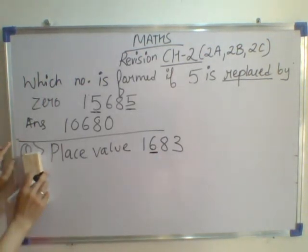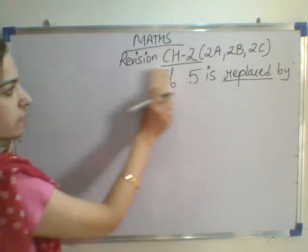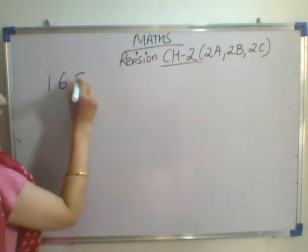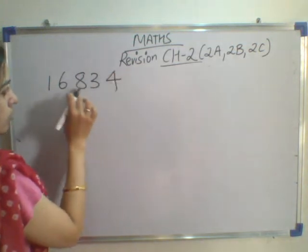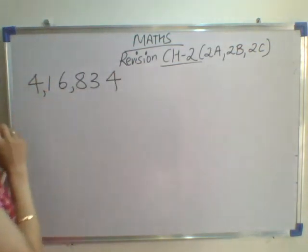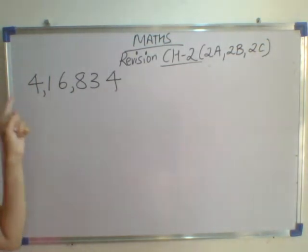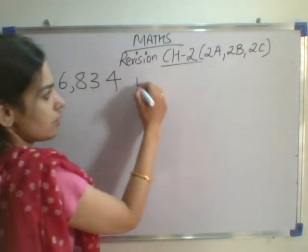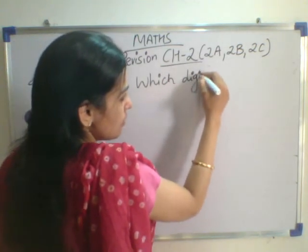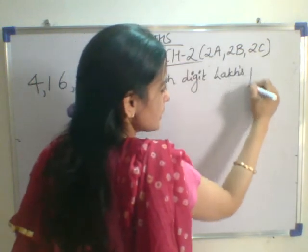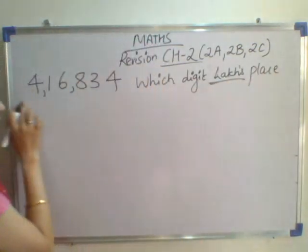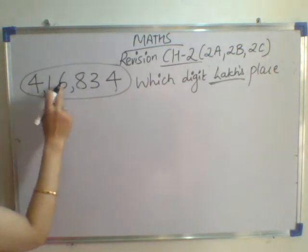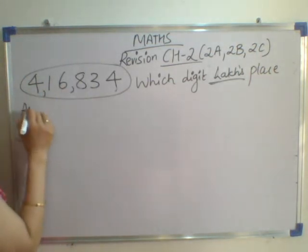So, what we have discussed till now — we have discussed place value. If I write any number and put the commas, and if I ask you which digit is at the last place, you have to tell me the digit at that place. You will be counting from the right: 1s, 10s, 100s, 1000s, 10,000s. So your answer will be 4.